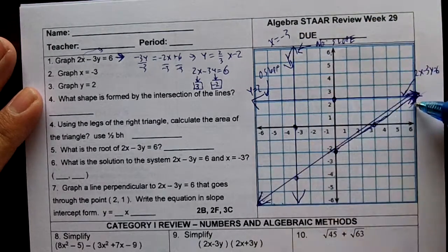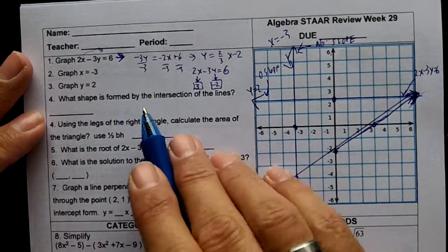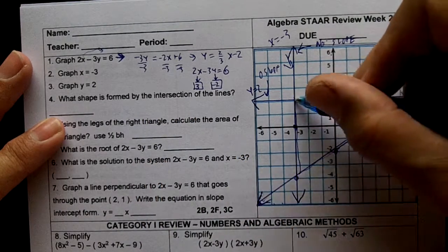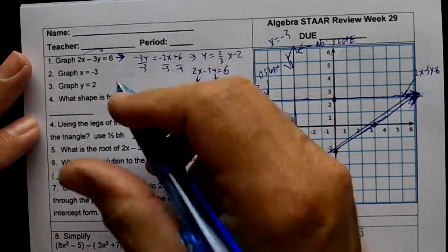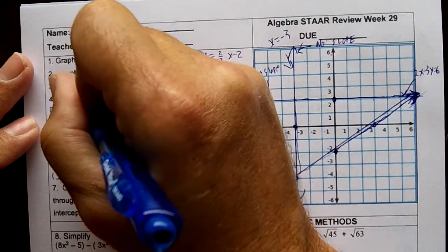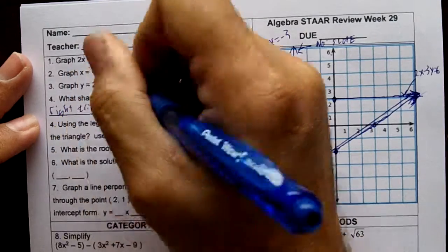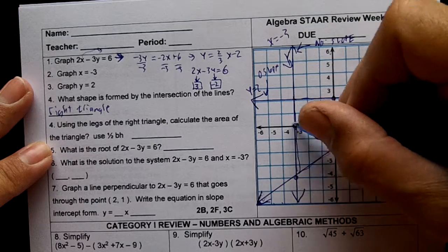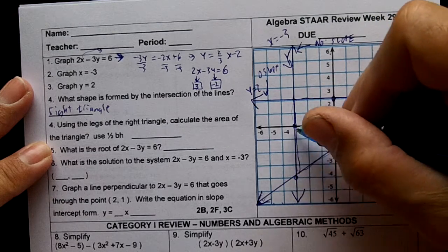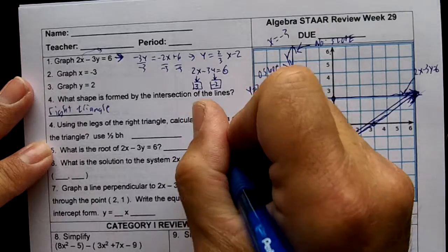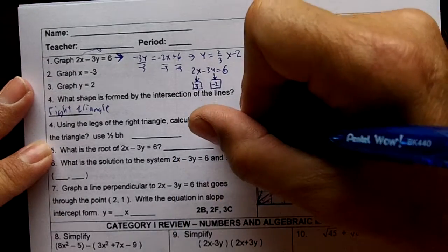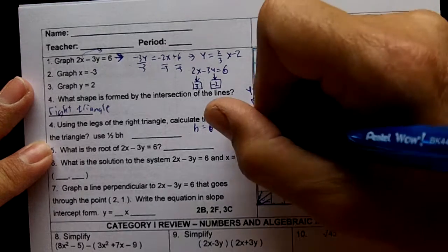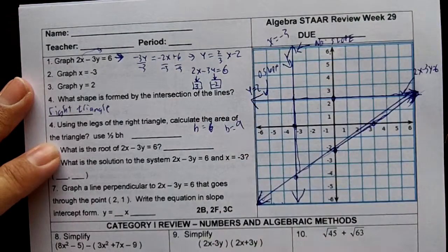What shape is formed by the intersection of the lines? We have a right triangle. Using the legs of the right triangle, calculate the area. This right here would be the height, one two three four five six, so the height is six. This right here would be our base, one two three four five six seven eight nine, the base would be nine. So we're going to do one half of six times nine which would be twenty-seven.